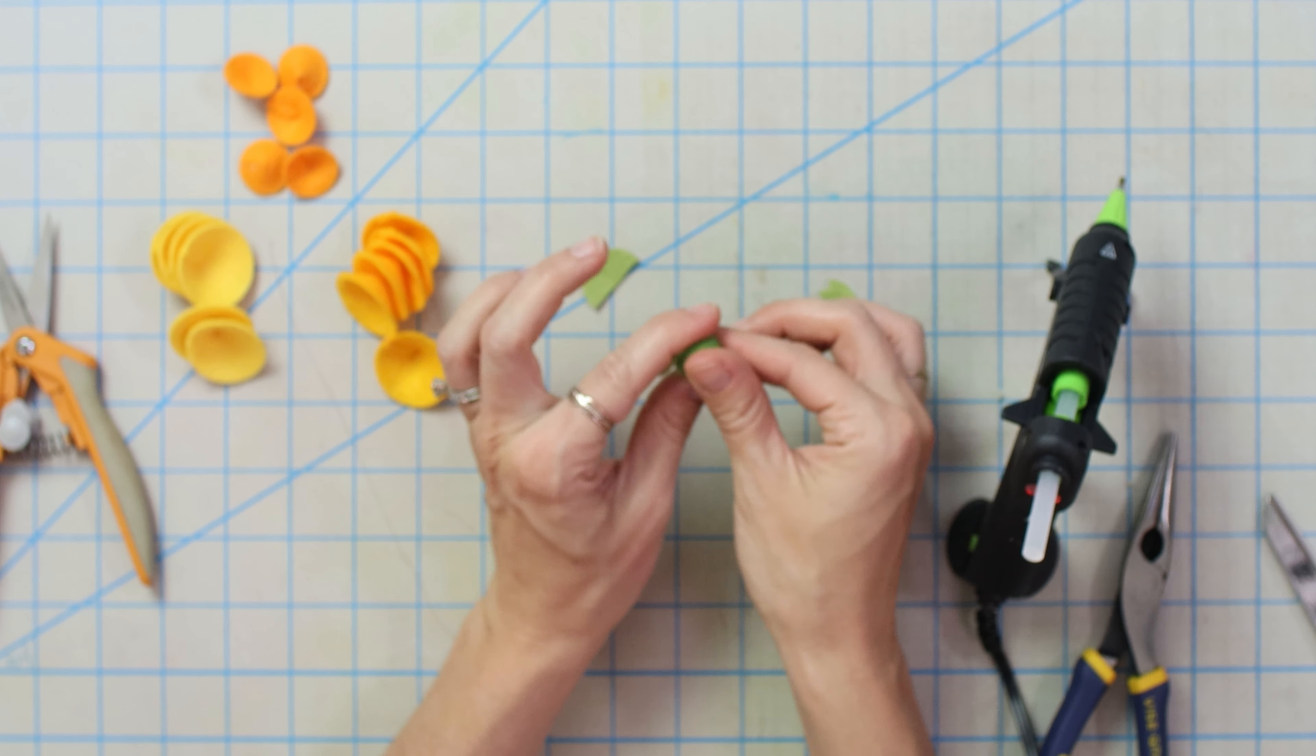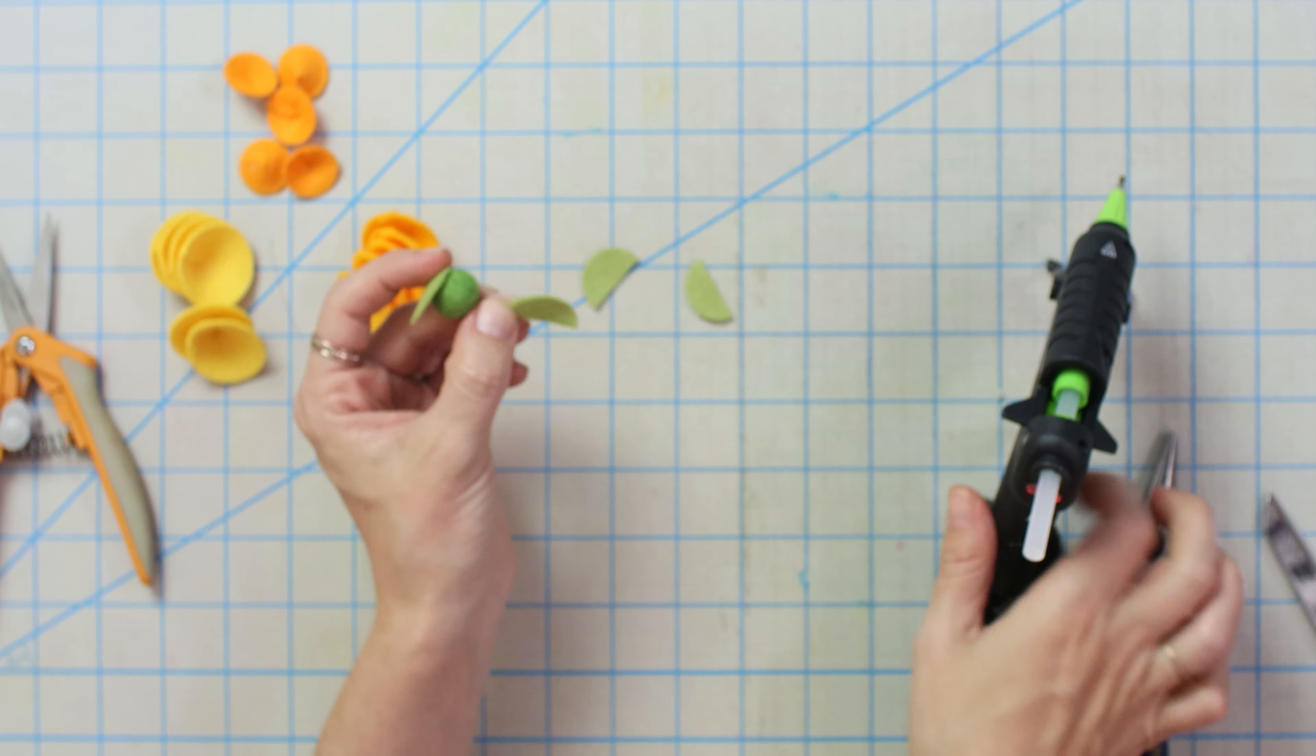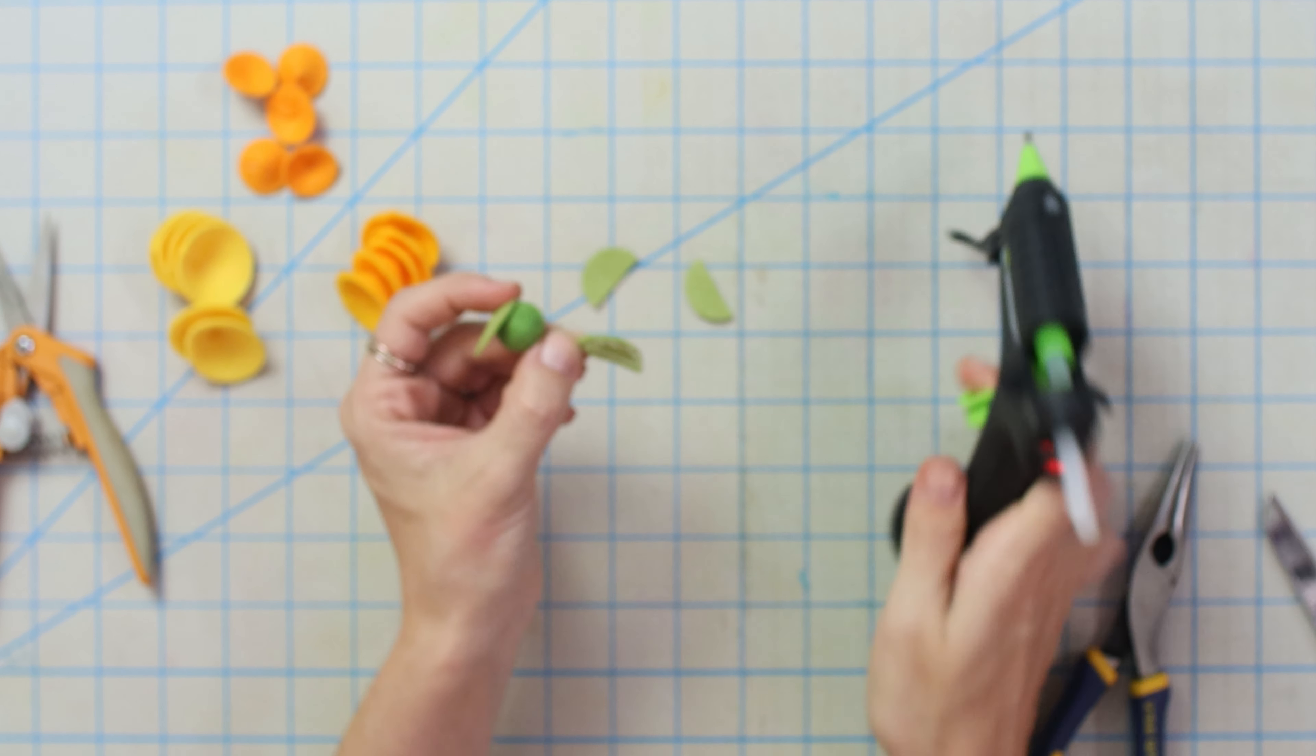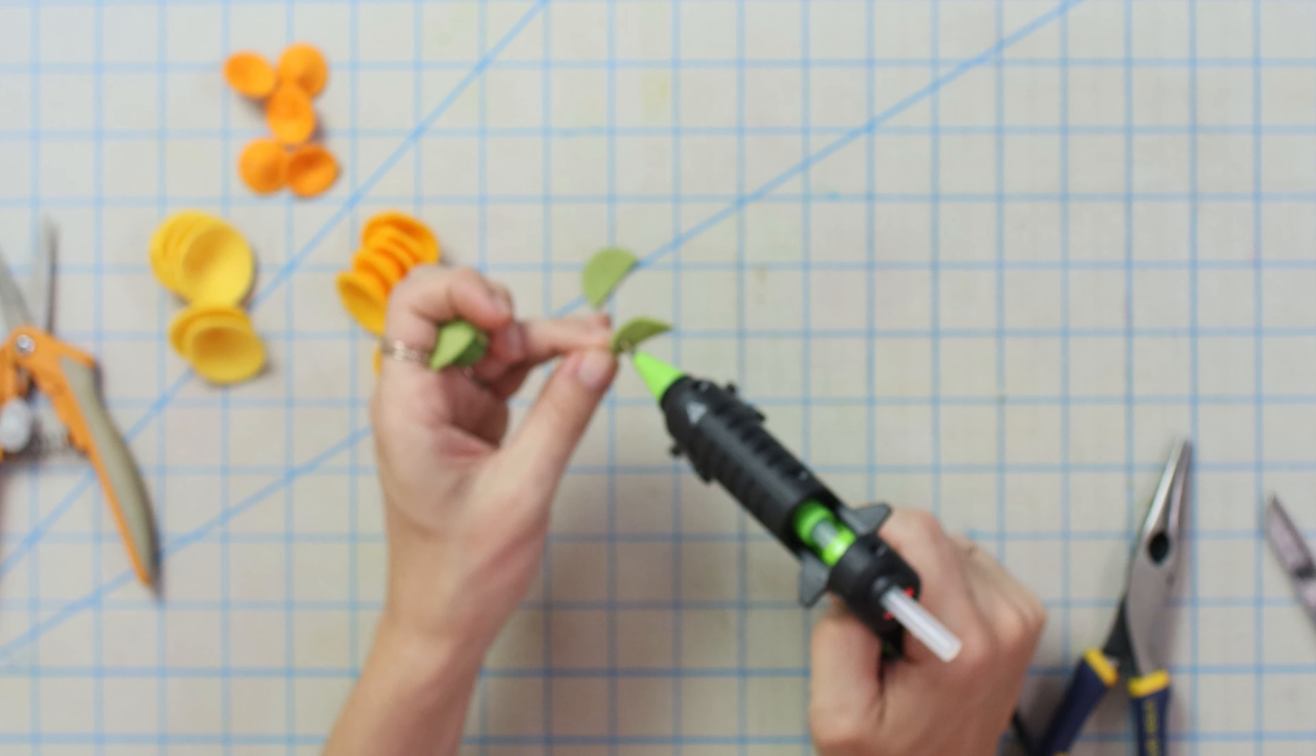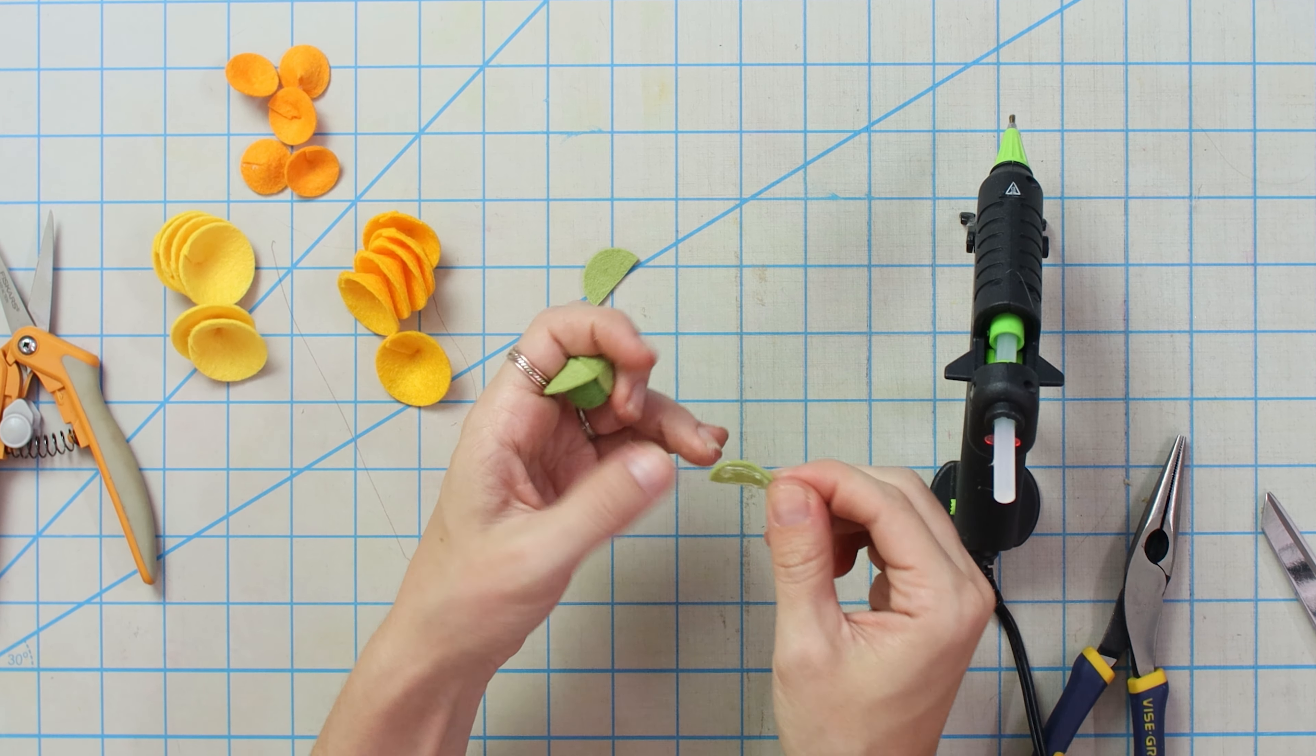So I've got all of those petals ready. We're going to take these ones and we're going to go ahead and cut them in half. We're going to put glue on half of one of them, put it on our foam ball, and then we're going to start moving around with our half petals here.